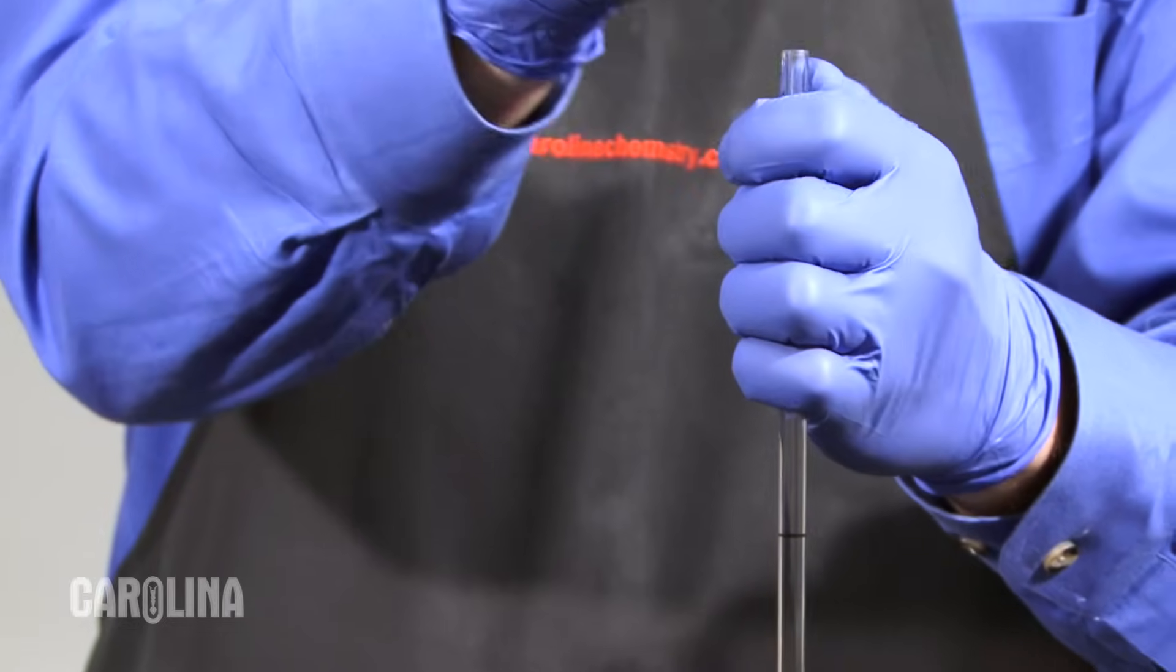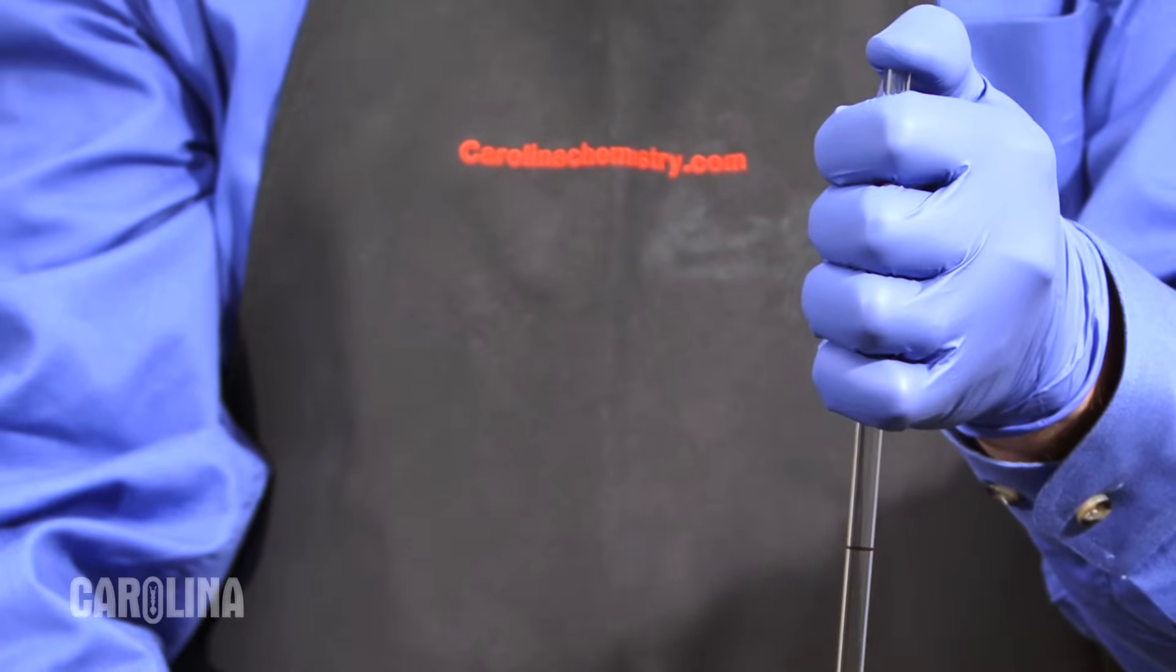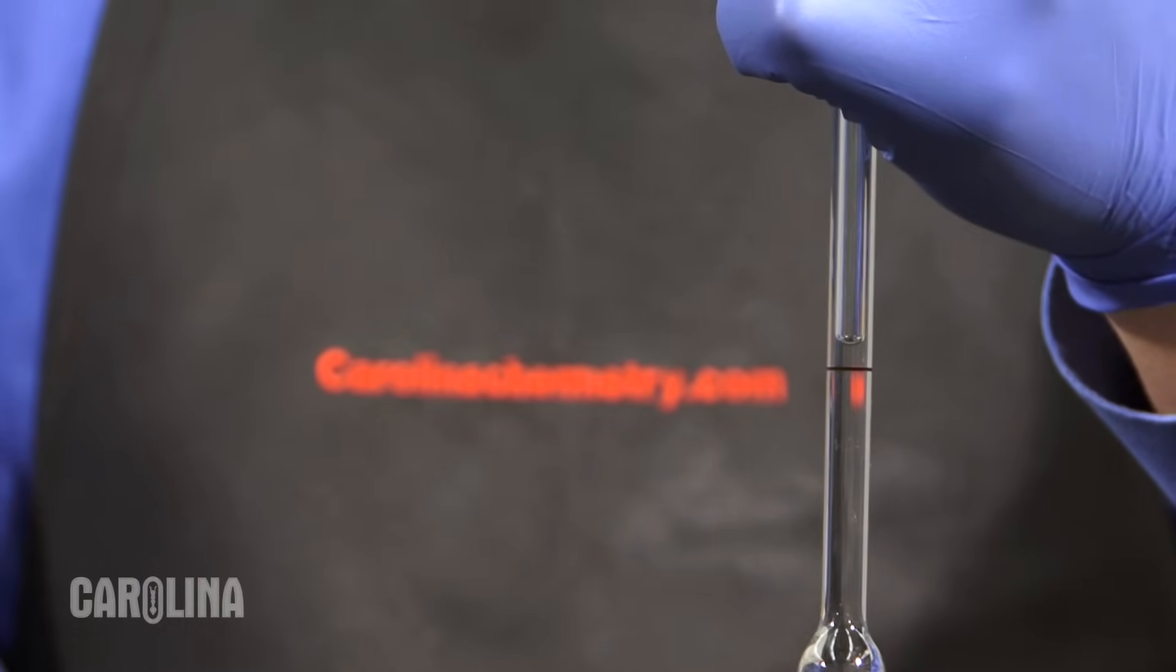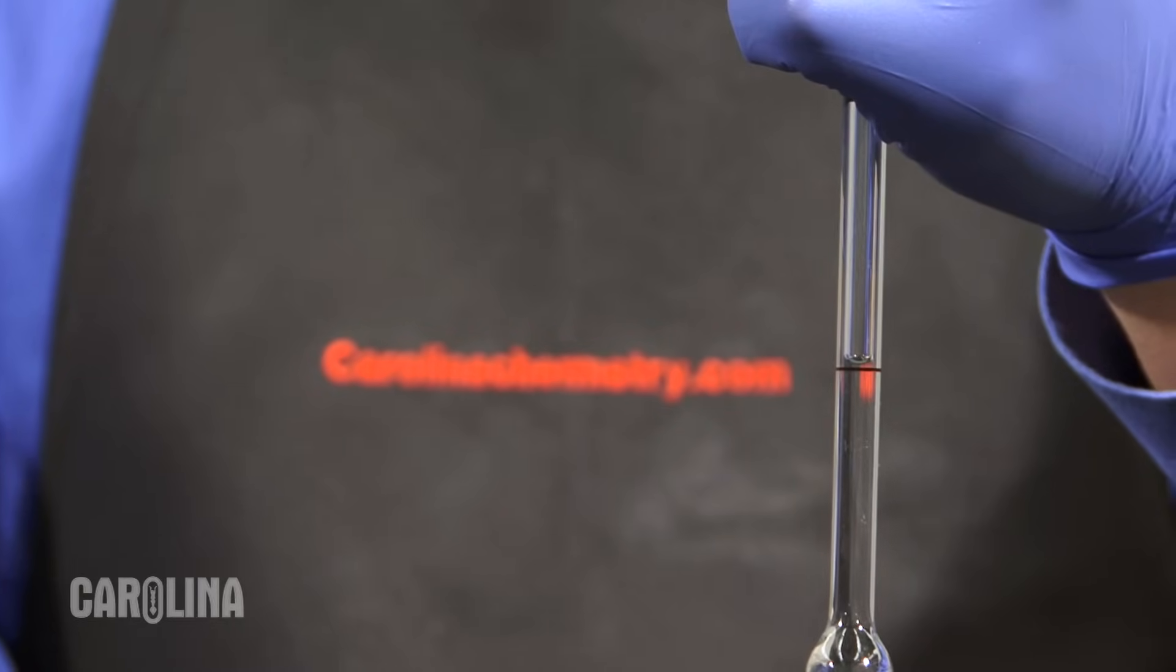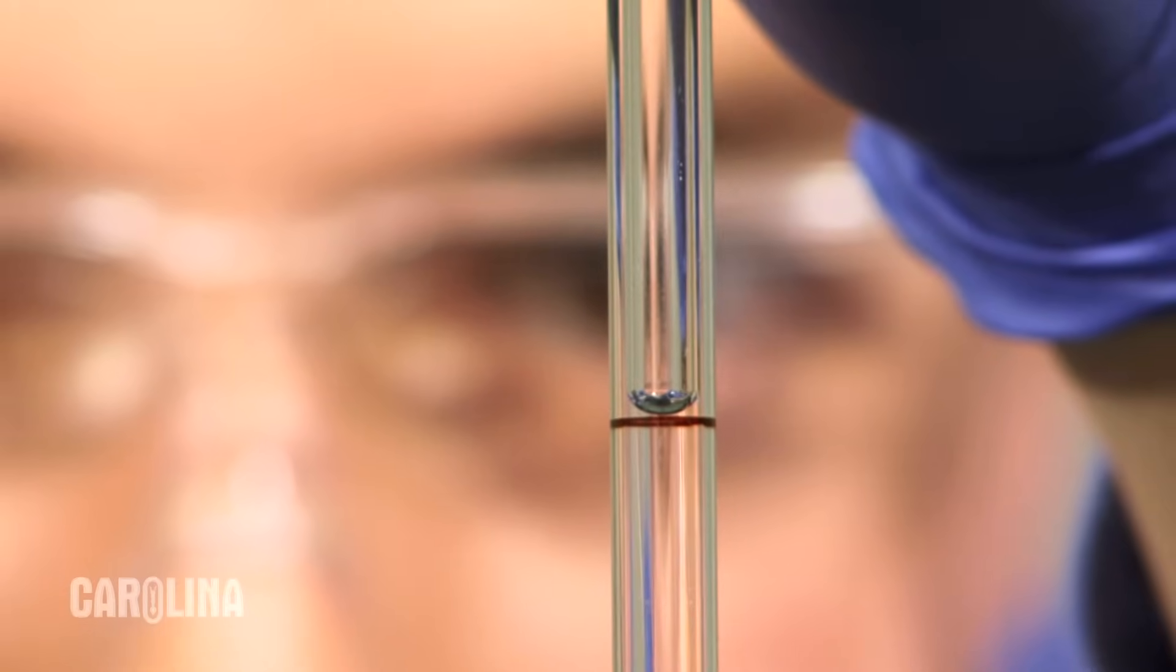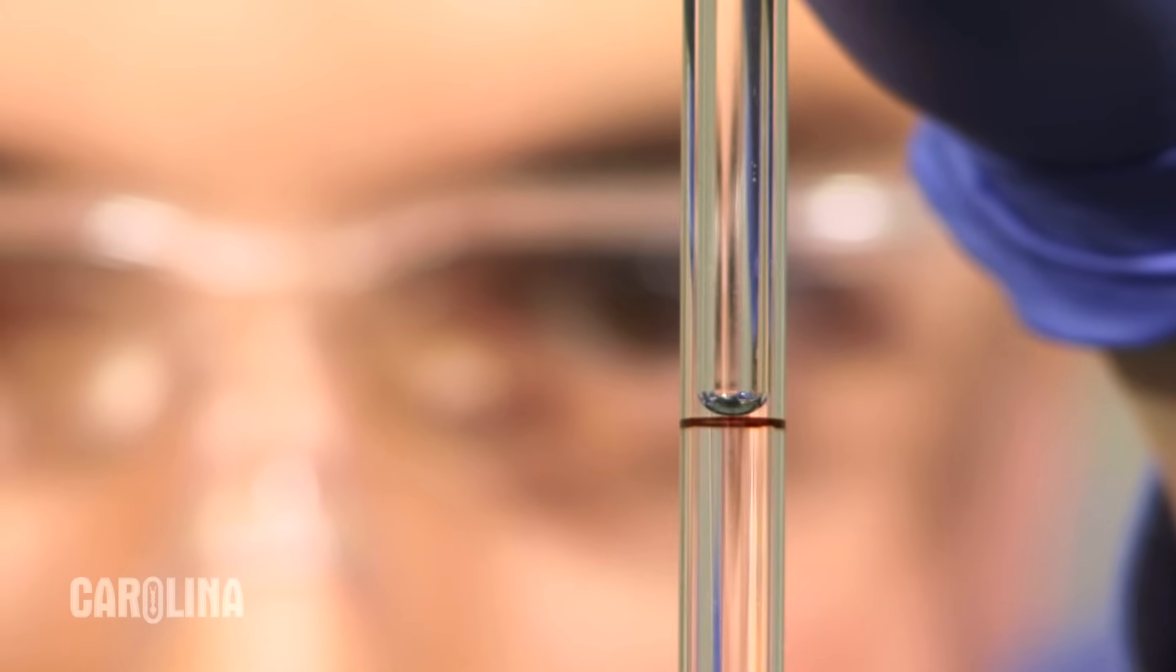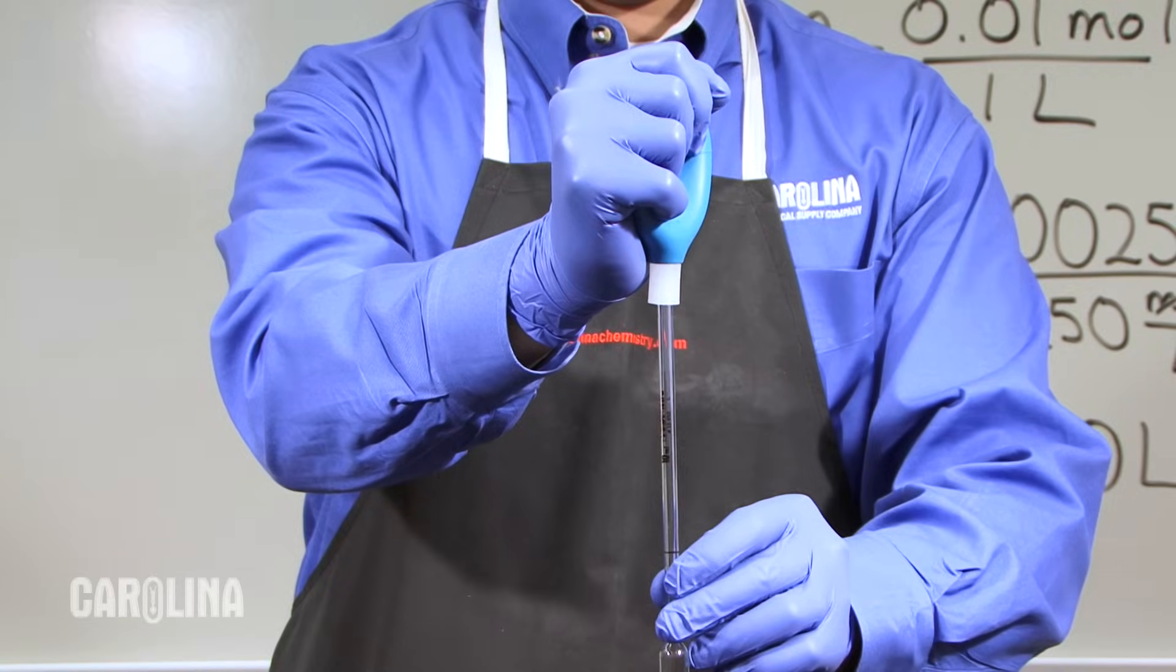Remove the bulb and place your other thumb over the end creating a seal and slowly release just the corner of your thumb, allowing the liquid to exit so that the meniscus is directly on the line marked on the pipette. This takes some practice and you may need to use the bulb to pull more liquid into the pipette again.